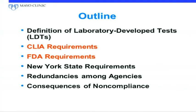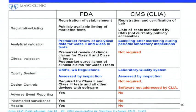CLIA requirements for analytical validation include accuracy — how close are you to the truth — precision, how many times serially you can get close to that result, reportable range, reference range, analytic specificity, and sensitivity. All of these have to be determined and shown to the clinician. CLIA does not mandate that we determine clinical sensitivity and specificity — that's the FDA's domain. CAP, the College of American Pathology, has deemed status with CLIA, and in recent years their molecular checklist is seeing clinical validation requirements appearing, which signals CMS is also becoming interested.